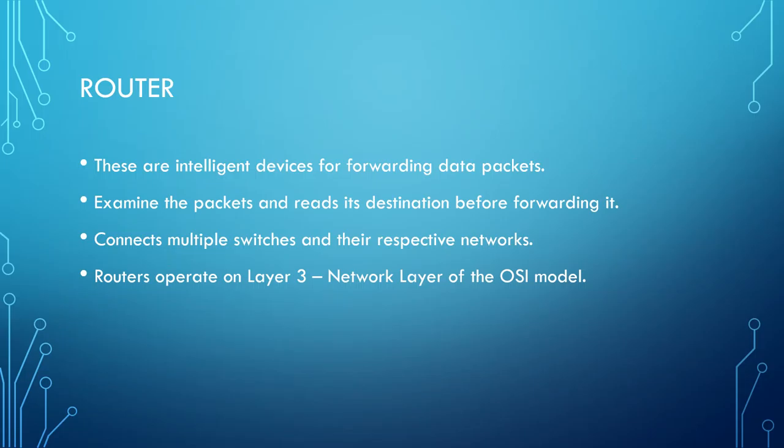Routers are intelligent devices for forwarding data packets, operating on Layer 3 — the network layer of the OSI model. Routers can connect multiple switches and their respective networks, and can also be considered gateways — connecting two external networks located on a WAN. Each packet that passes through the router is examined and its destination is read before it is forwarded using the router's routing table.